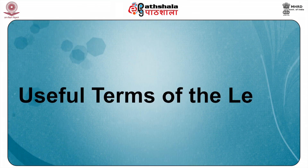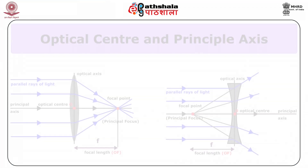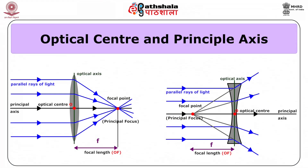Now we will discuss the useful terms of the lens. First, the optical center — it is a point within the lens through which light passes undeviated, or without changing its travelling path. Second, the principal axis — the axis passes through the optical center of the lens, which is horizontal when the lens is placed vertical to the horizon. It is the stroke linking the centers of curvature of its surfaces.